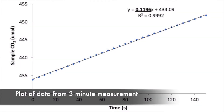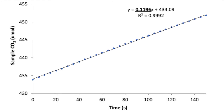Here we see the raw output from our measurement, where the CO2 concentration on the y-axis is plotted against time on the x-axis. The slope of this relationship tells us the rate of change in the CO2 of the sample chamber over time, and will be needed in our final calculations of root respiration.